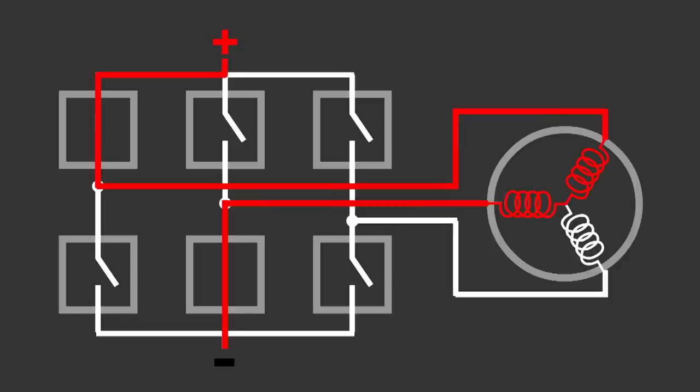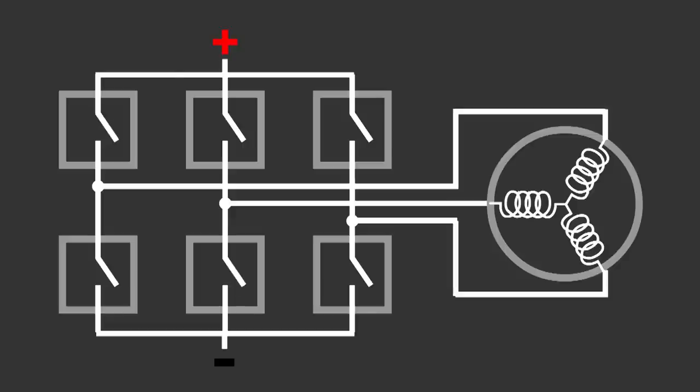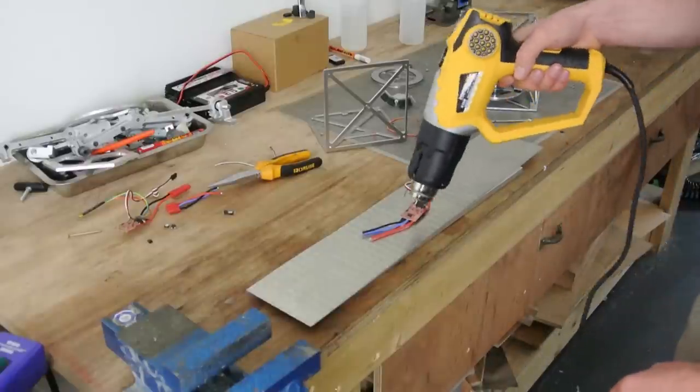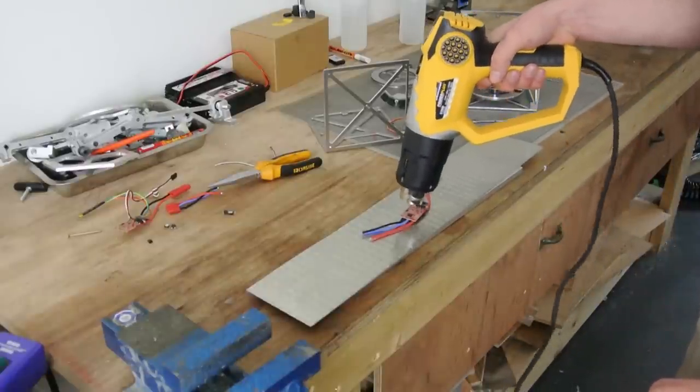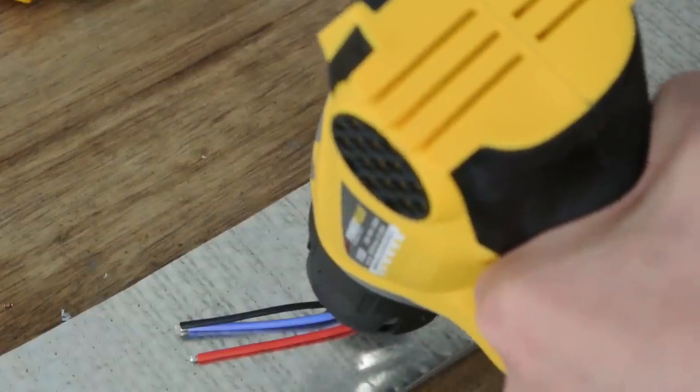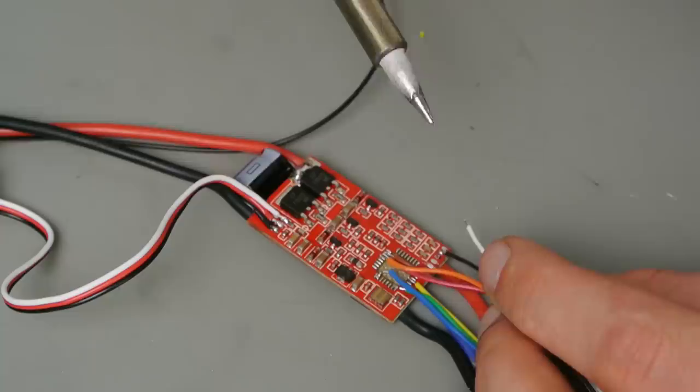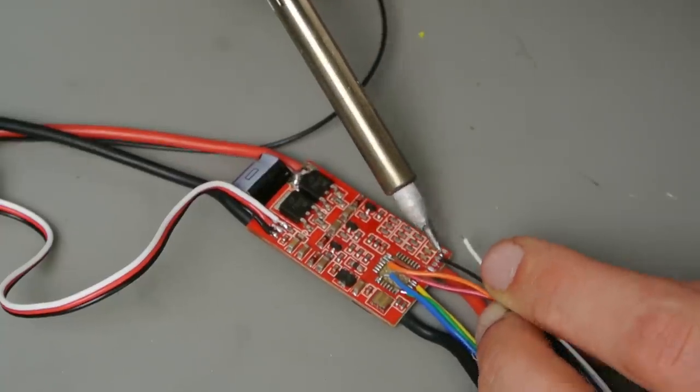So by opening and closing those switches at the right time, in the correct sequence, you can rotate your motor. Learning to write my own firmware for the onboard chip was gonna take too long. So I decided to remove the chip and replace it with an external microcontroller. This also gives me the possibility to add extra sensors to the motor.